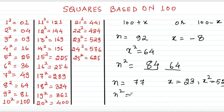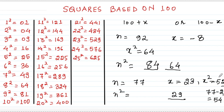Another example: n equals 77. Here x equals negative 23, and x² equals 529, which is a three-digit number. The last two digits of n² are 29. Then n minus 23 gives 77 minus 23 equals 54, and the leftover digit 5 acts as a carry over — carry over is always added — giving 54 plus 5 equals 59. So n² equals 5929.